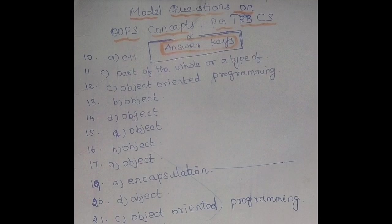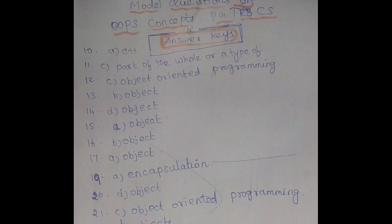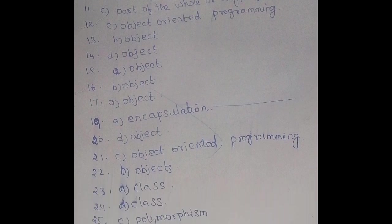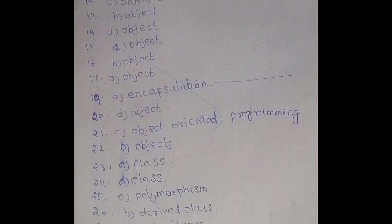Question 10: C++. Question 11: parts of the world are a type of variables, data type, a relationship. Parts of the world on type of, relationship. Question 12: object oriented programming. Question 13: object.